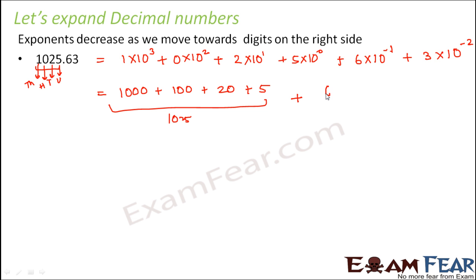And what about this part? 6×10⁻¹ is basically 6×(1/10) and this is basically 3×(1/100). So this gives you 0.6 and this gives you 0.03. When you add 1025 + 0.6 + 0.03, you get 1025.63.